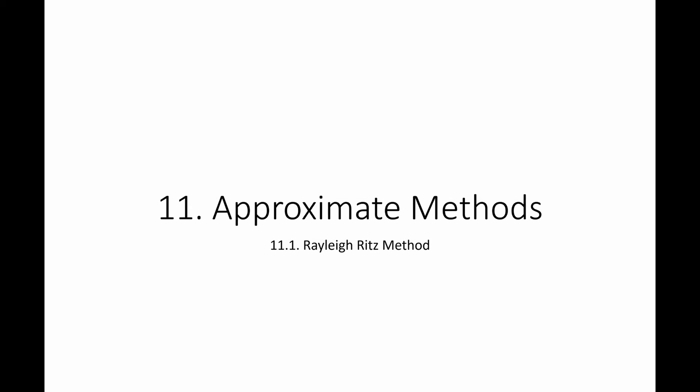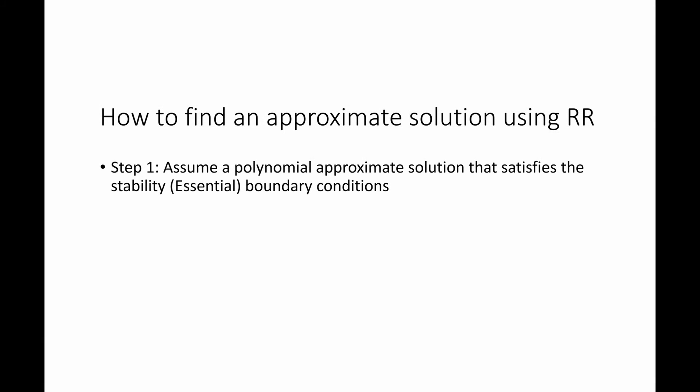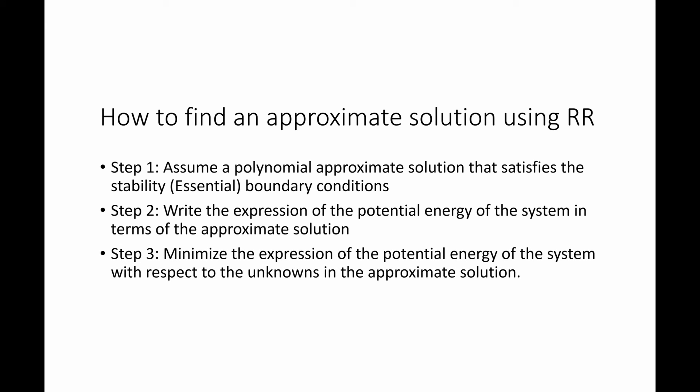In this video we're going to study the Rayleigh-Ritz method. The first step is to assume a polynomial approximate solution that satisfies the stability boundary conditions. The second step is to write the expression of the potential energy of the system in terms of the approximate solution. The third step is to minimize the expression of the potential energy with respect to the unknowns in the approximate solution.